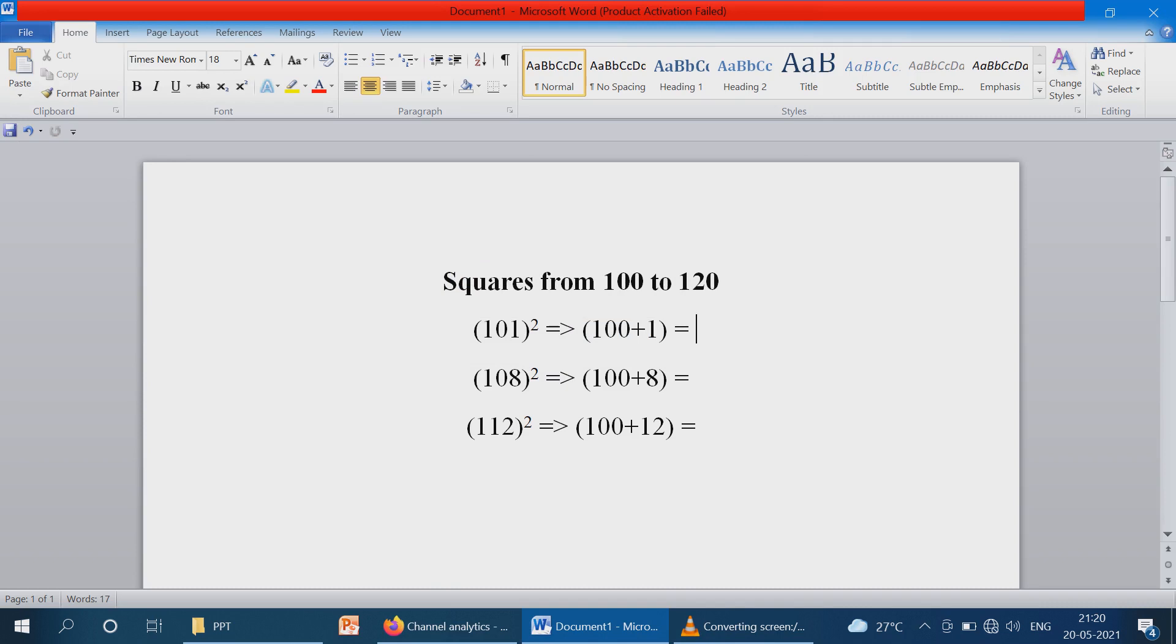Okay, let's start this video. First example, 101 whole square. Now, what do you do with a number square? If you have 101 into 101, you can follow the traditional method. That means you can go 100 plus 1 whole square, which is a plus b whole square format.